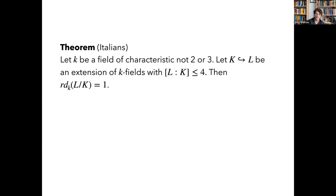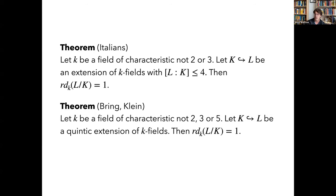There's an old theorem: Cardano, Tartaglia, and Ferrari showed that any extension of degree at most four has resolvent degree one, because you can solve it in radicals, and radicals are one-variable functions by Kummer theory. Less well known, there are theorems of Bring and Klein saying that any quintic extension can be solved using only one-variable functions — Klein did this beautifully using the icosahedral function. Interestingly, Kronecker stumbled on essential dimension when he discovered that the essential dimension of the general quintic is two.